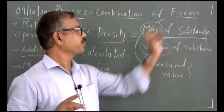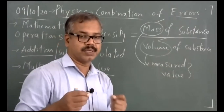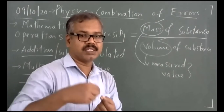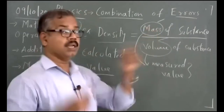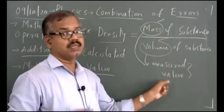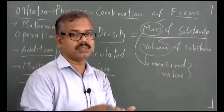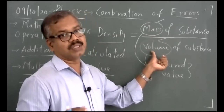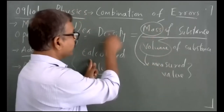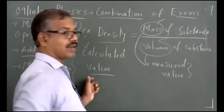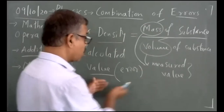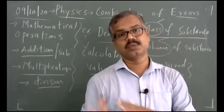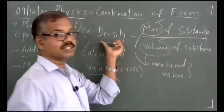For example, I have a substance, I measure its mass, then I measure its volume — measuring its length, width, and breadth. These two are measured values. Using the mathematical formula density equals mass upon volume, what is the error in the calculated value? How error moves from measured value to calculated value — this is called combination of errors. There are two headings: errors in sum or difference, and errors in a product or division.